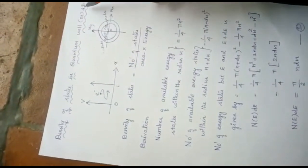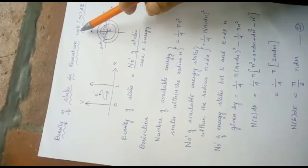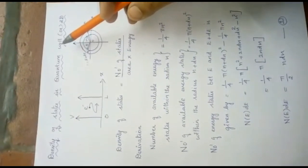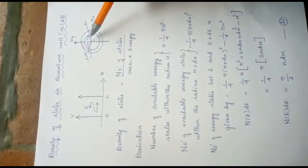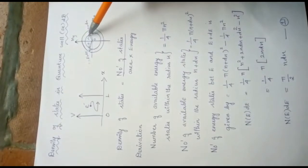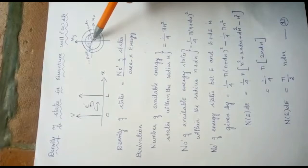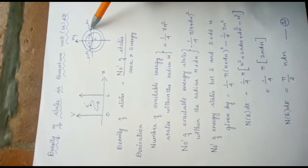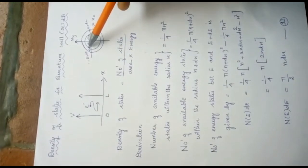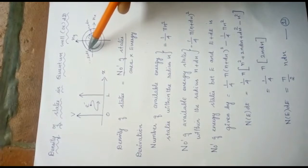Here, we are considering density of states in a quantum well that are having a two-dimension. Here, n is the radius from O to this layer, and from this region to here, the radius is n plus dn. So at this point, the energy is E. Here, E plus dE.